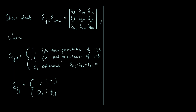If instead you have an odd permutation of 1, 2, 3 — meaning something like epsilon_132, epsilon_213, or epsilon_321 — those are all minus 1. And if you have any other combination of indices then it's 0; basically if any two of them are the same then it's 0. The Kronecker delta delta_ij is simpler: it's 1 if the two indices i and j are the same, and 0 otherwise.